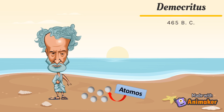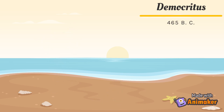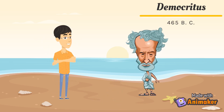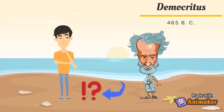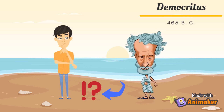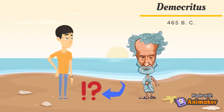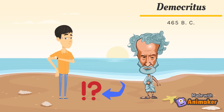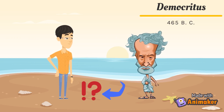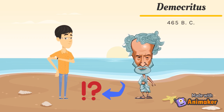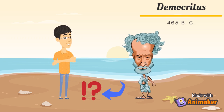Democritus proposed that matter could not be divided into smaller pieces forever. He claimed that matter was made of small hard particles that he called atomos. They are tiny particles — invisible — that cannot be broken into smaller pieces.